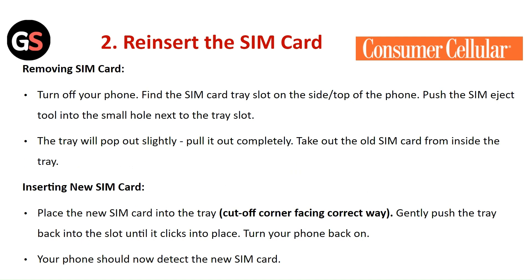Inserting the new SIM card: place the new SIM card into the tray with the cut-off corner facing the correct way. Gently push the tray back into the slot until it clicks into place. Turn your phone back on. Your phone should now detect the new SIM card.